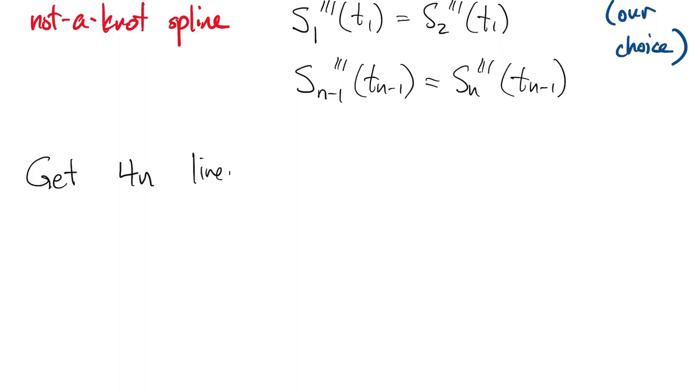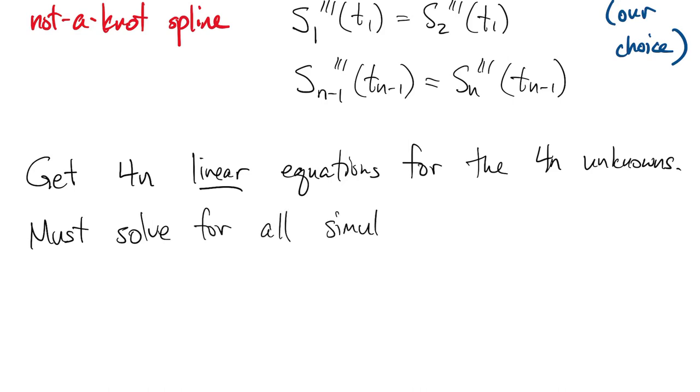So to recap, we now have 4n equations. They are linear in the 4n unknown coefficients. So we have a linear system that has to be solved for the coefficients at a cost of order n cubed flops.